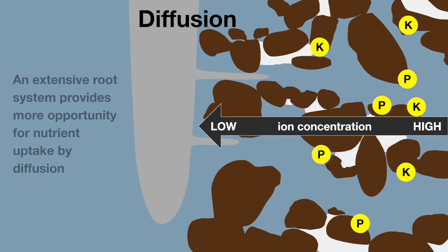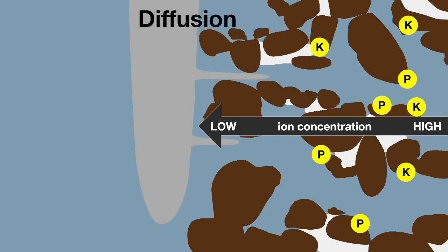The size of the root system is key for absorption of nutrients supplied via diffusion. Root exudates, such as organic acids, enhance the movement by diffusion of nutrients like phosphorus, zinc, iron, and manganese.